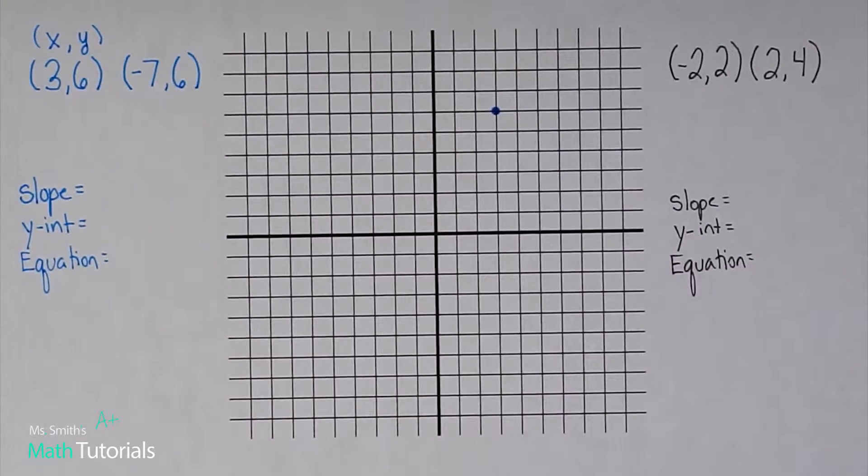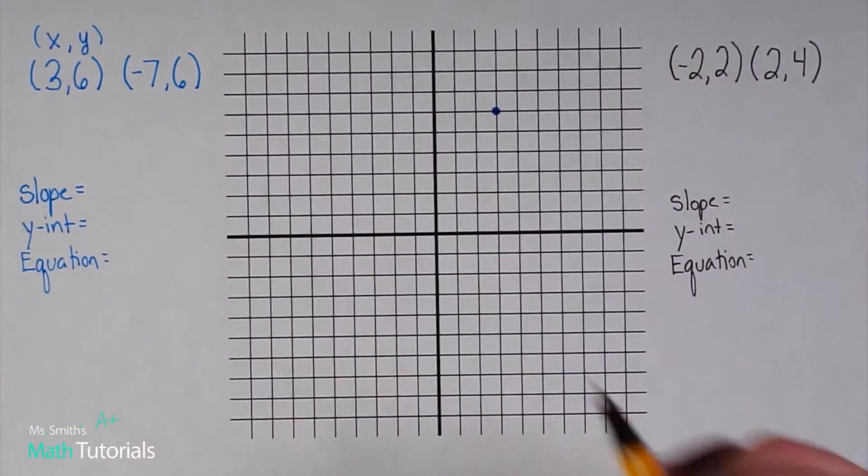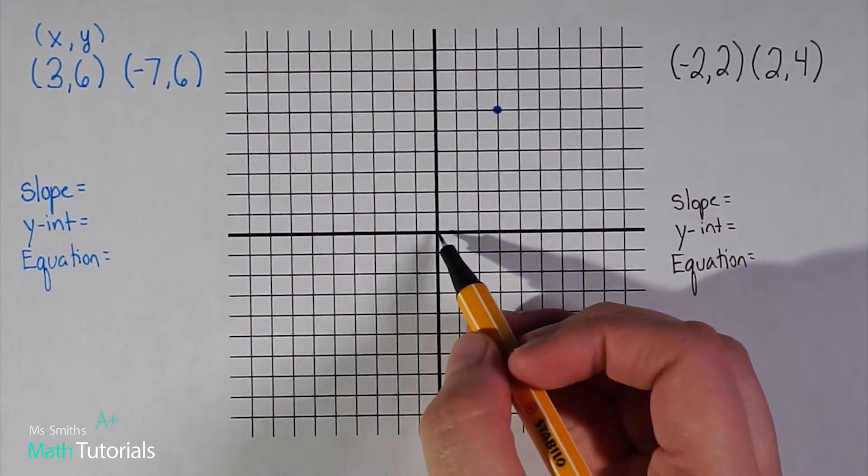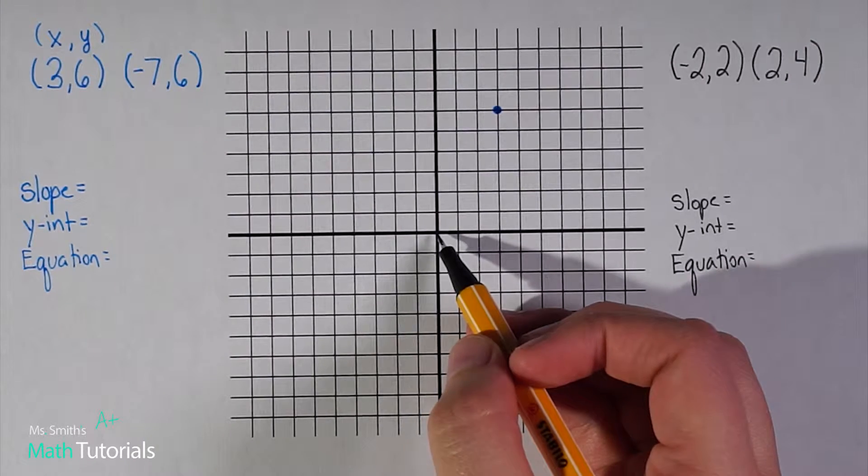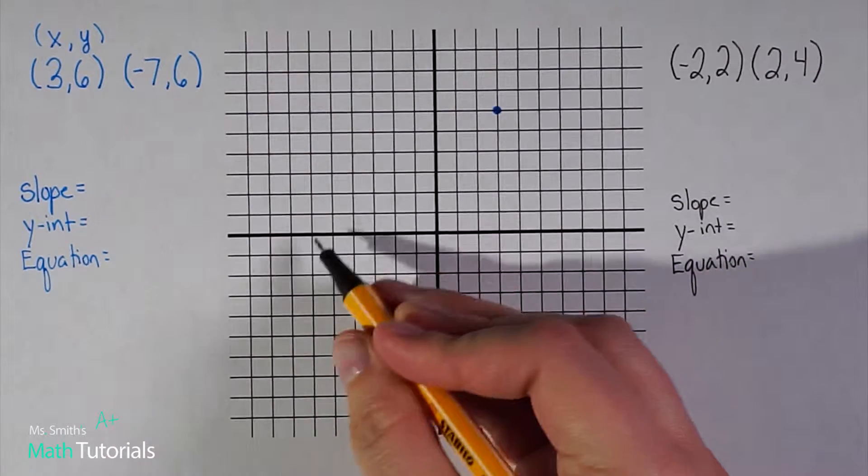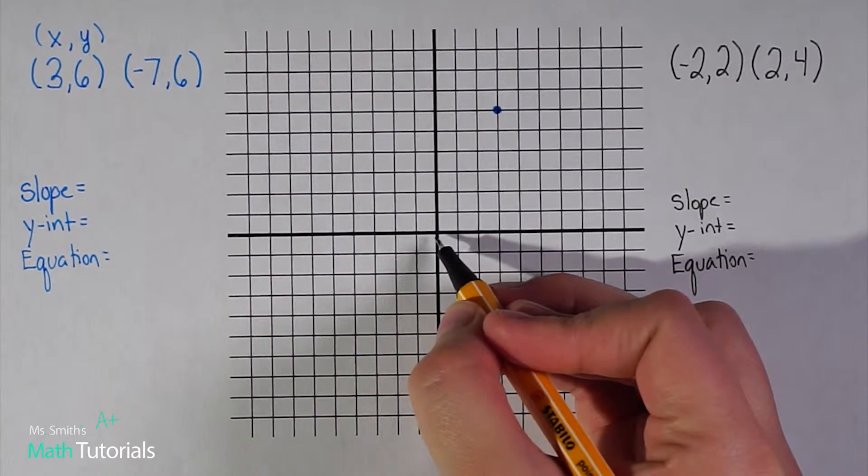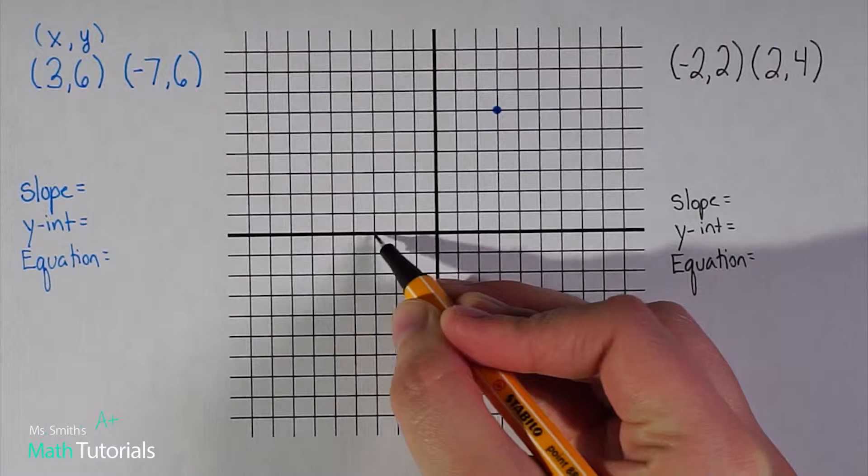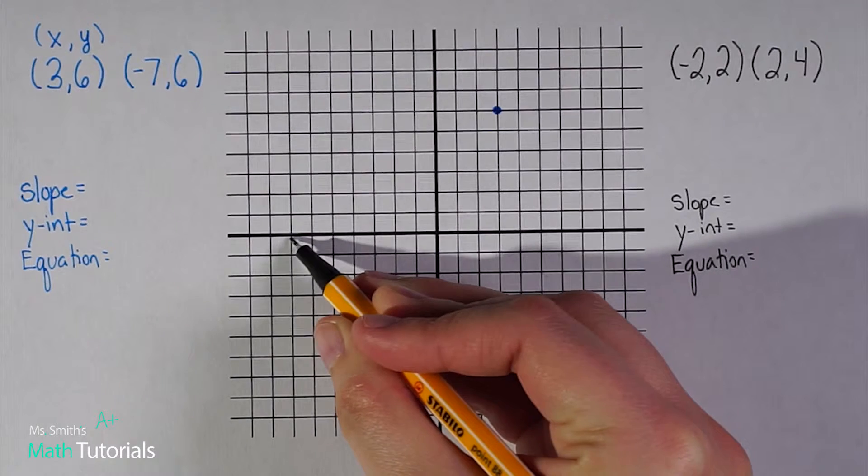Now let me graph my second point: negative seven, positive six. I want to start at my origin. My x is negative seven, so I count this way, these are my negative numbers: one, two, three, four, five, six, seven.